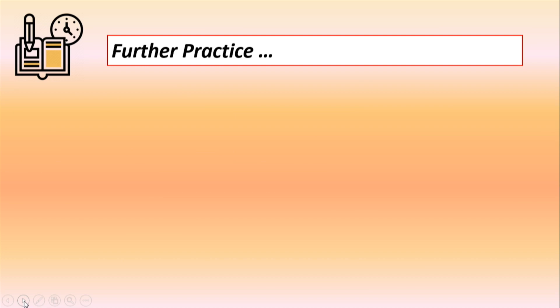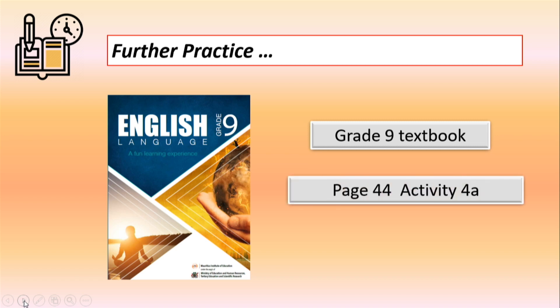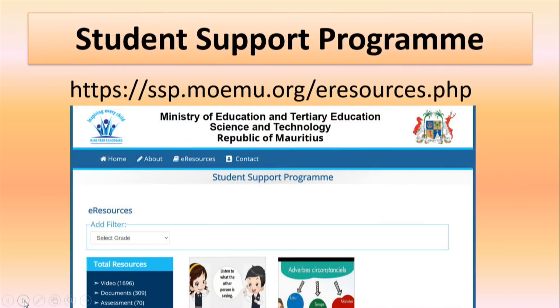If you want further practice on the passive voice of the present and past simple tenses, you can go back to your grade 9 textbook and complete activity 4a on page 44. Please note that you can watch this video again on the SSP website.